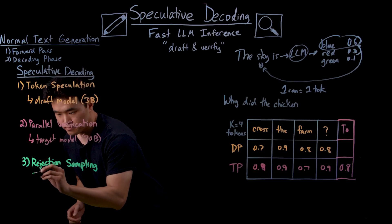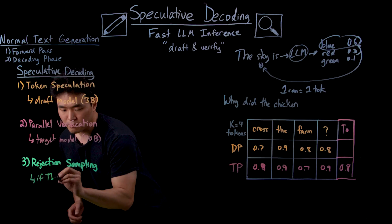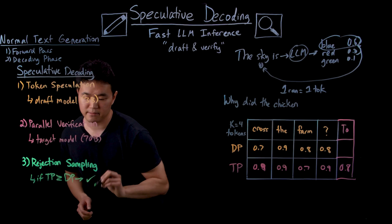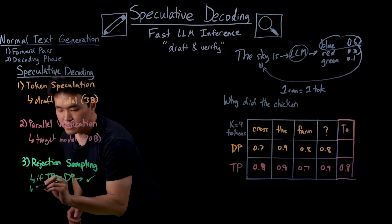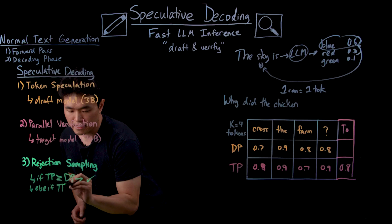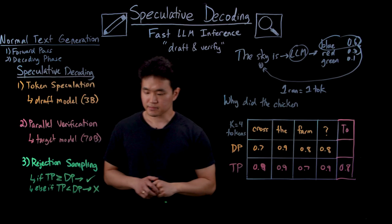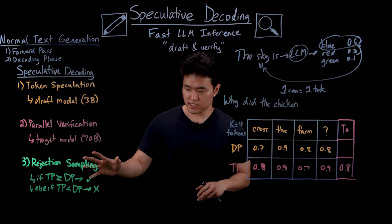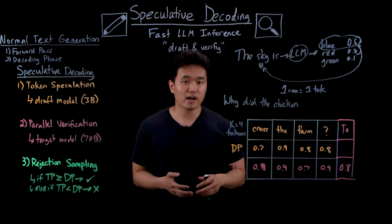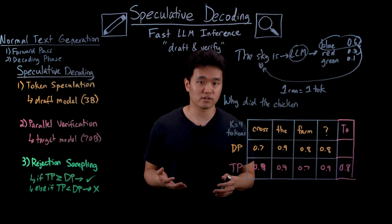But for simplicity, let's say that if the target probability is greater than or equal to the draft probability, then we can accept that token. Otherwise, if the target probability is less than the draft probability, then we have to reject that token. So we can repeat this check for each token until we get to the first rejection, at which point we discard any remaining guesses and then have the target model correct the output.